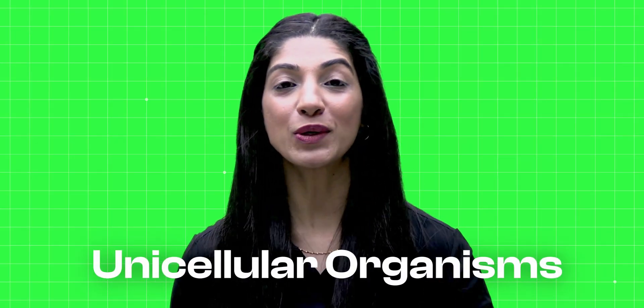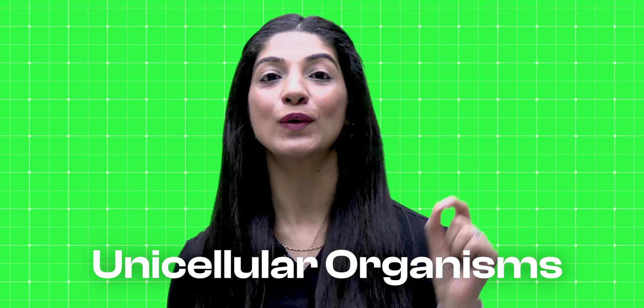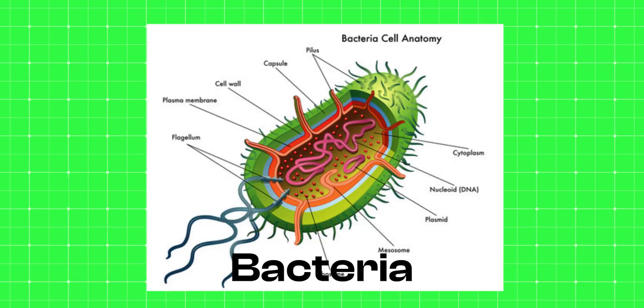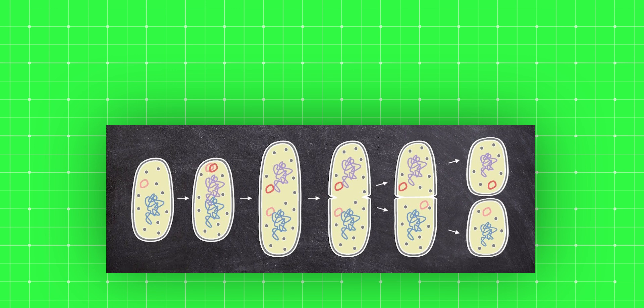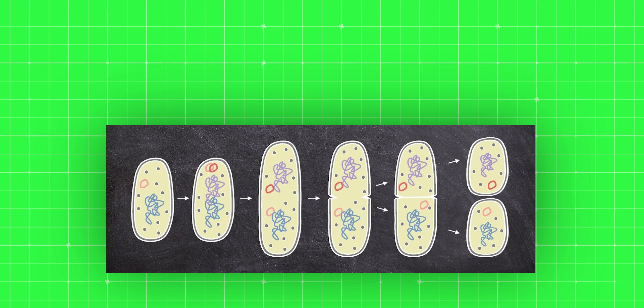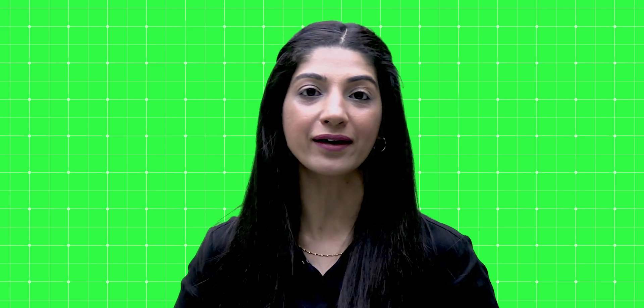I am talking about unicellular organisms such as bacteria. Most of you know that when these organisms mature biologically, they simply divide into two equal halves by the simple process of binary fission. It includes karyokinesis — that is, division of the parent nucleus into two equal daughter nuclei — as well as cytokinesis, division of the cytoplasmic contents into two equal daughter cells.